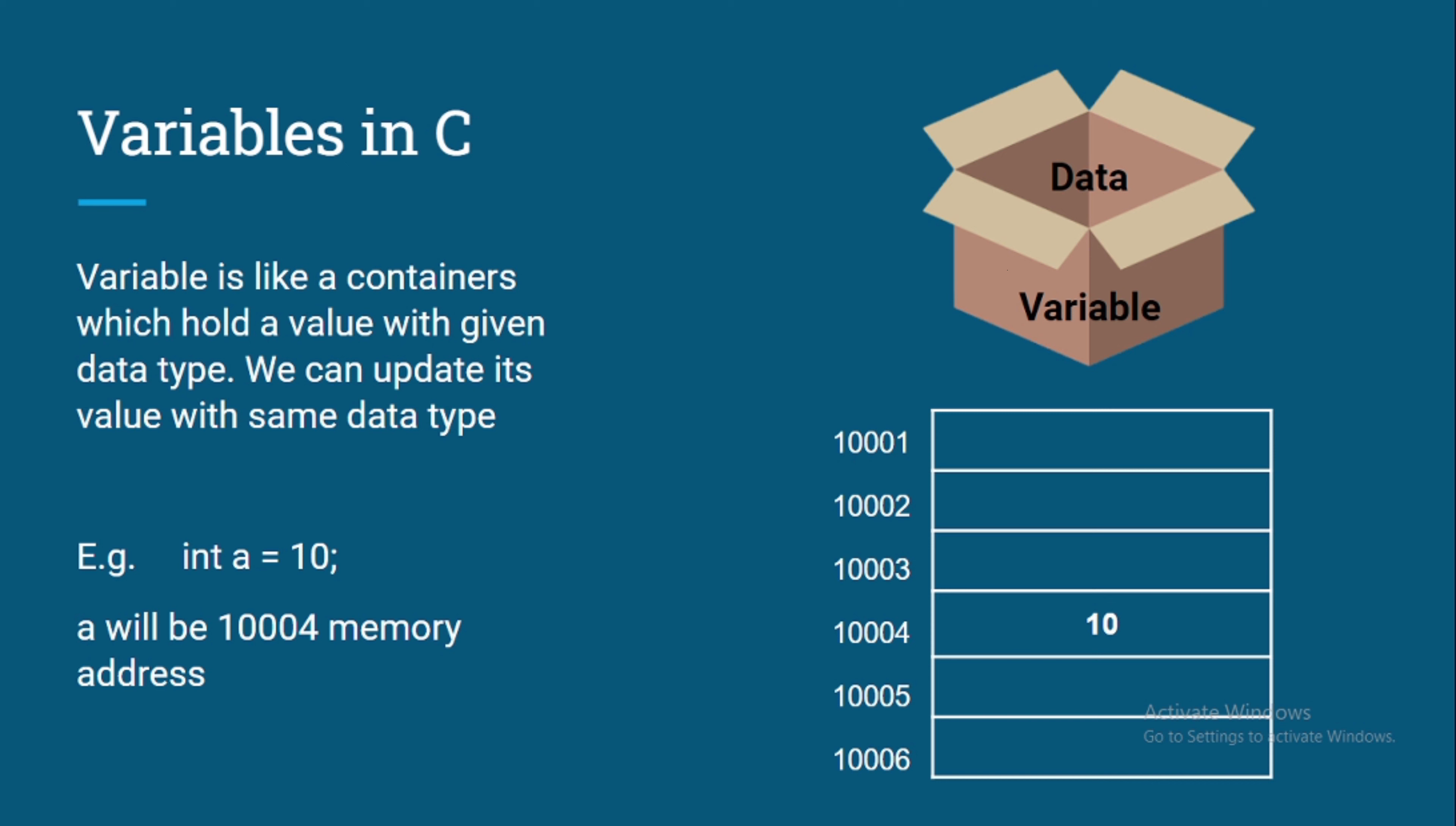And why its name is variable? Because the data which is stored into a variable is not permanent. We can change it. It keeps changing the values if we want to update its value. For example, the value of this variable is 10 and later on we want to update the value to 20, 30, 50. So that is the job of a variable to keep a value into it. Variable is a box and data is the data which is stored into that box.